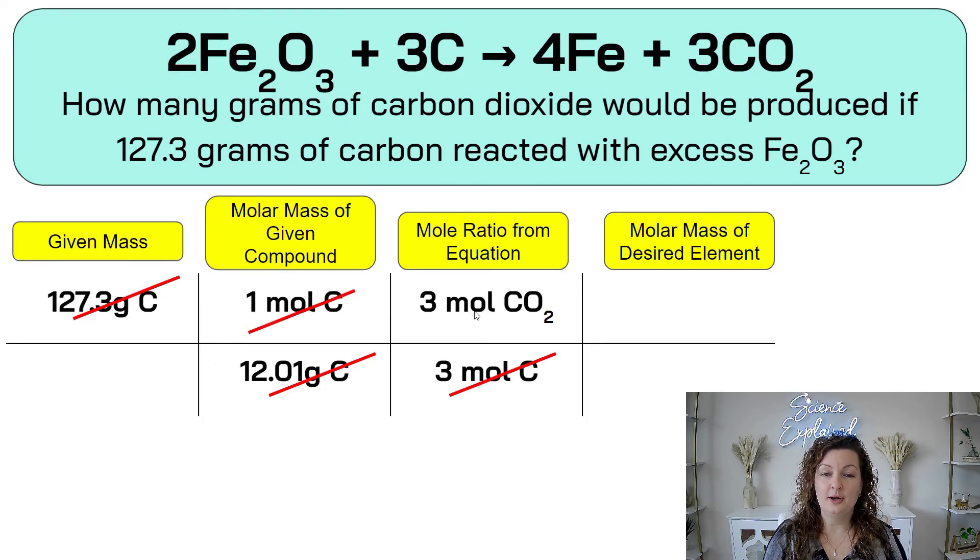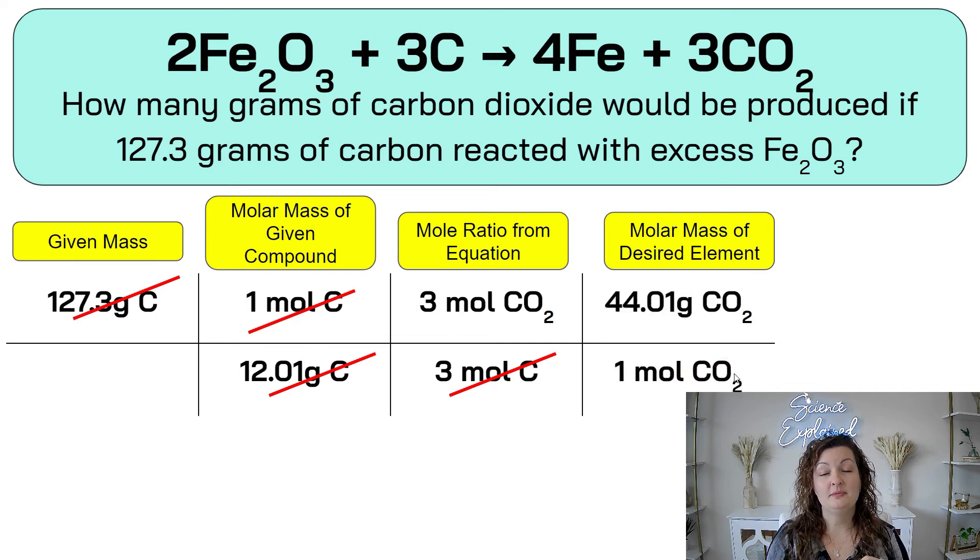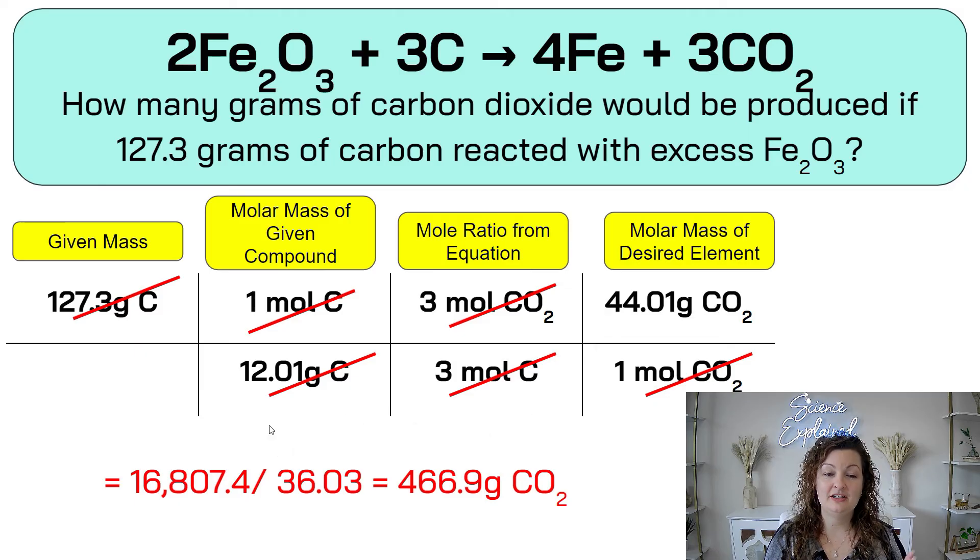So we have moles of carbon dioxide. Diagonal down has to be moles of carbon dioxide. And we're going to change this into grams because that's what our question is asking for. Grams of carbon dioxide. So we know that one mole, which is on the bottom of carbon dioxide equals the molar mass of carbon dioxide. Go to the periodic table, search up carbon, add it to two oxygens, and you're going to get 44.01 grams. Cancel those units. And then we can go ahead, multiply the top, multiply the bottom, and then divide these answers. And you end up getting 466.9 grams of carbon dioxide.